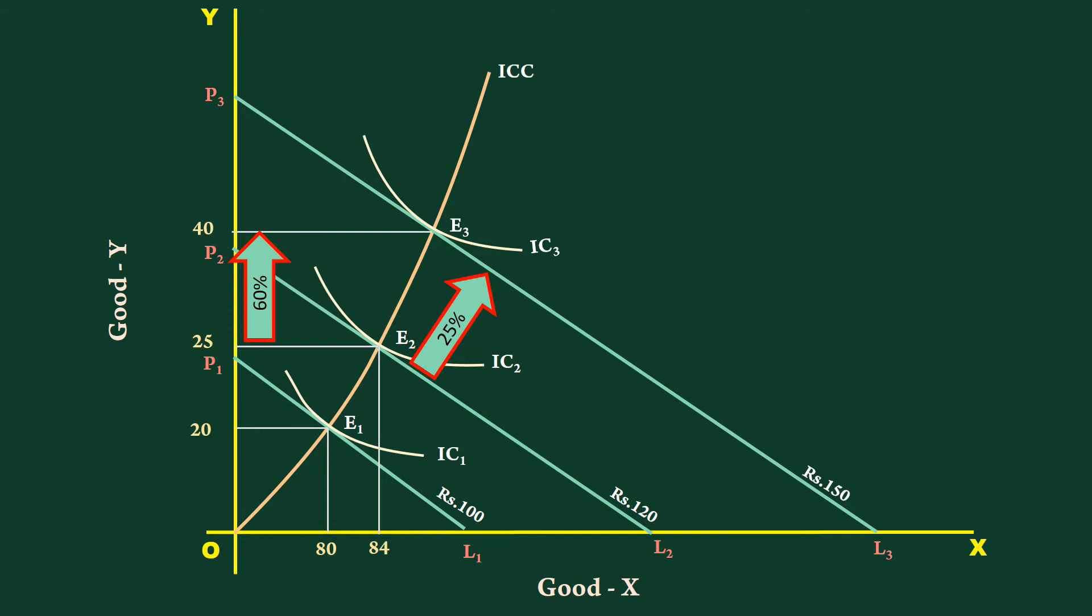Turn to good X. Consumer buys 89 units. This is larger than 84. But percentage increase is only 5 percent. The percentage increase in quantity is less than the percentage increase in income.